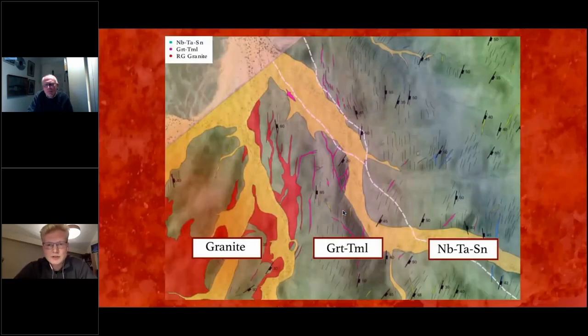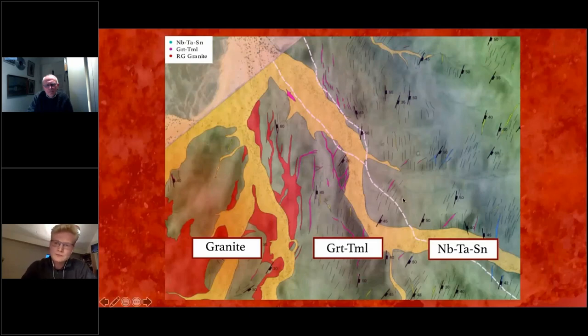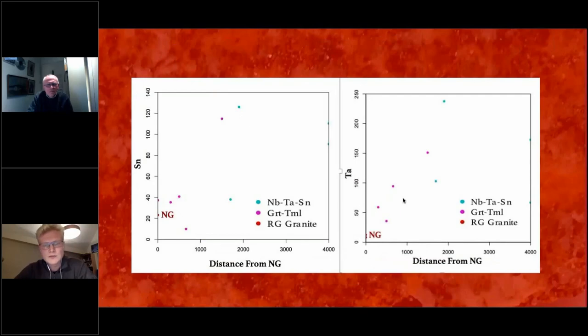Just by looking at the initial field mapping, you can see there's a distinct zonation of the types of pegmatites within the area. You have this granite body down to the left here, and these pink veins are your unmineralised garnet tourmaline pegmatites which carefully mantle the granite body itself. As you get further afield away from the granite body, you get more and more occurrences of these mineralised pegmatites. If you plot the key mineralising elements like tin and tantalum against distance from the nearest granite body, the overall concentration of these elements generally tends to increase with distance from the granite.